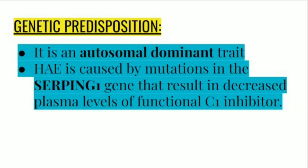Genetic predisposition of hereditary angioedema. Hereditary angioedema is an autosomal dominant trait which is caused by mutations in the SERPING1 gene, leading to decreased plasma levels of functional C1 inhibitor.